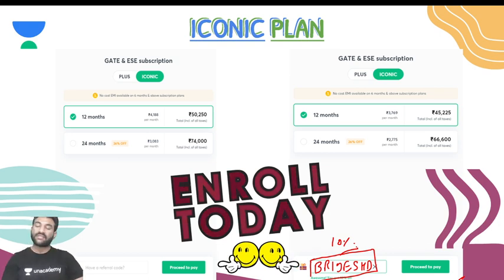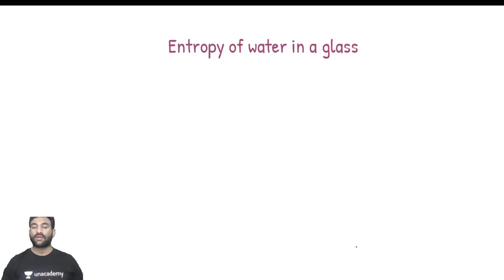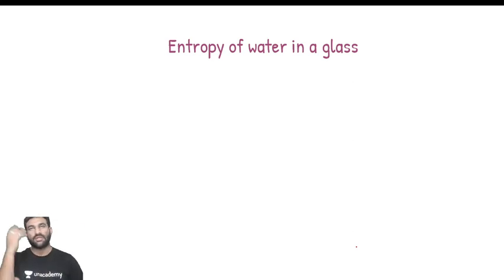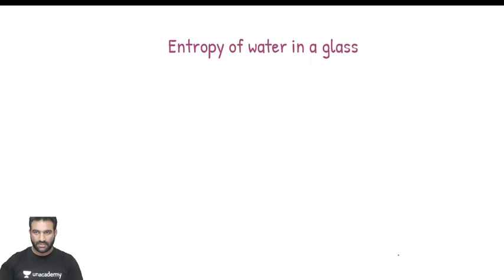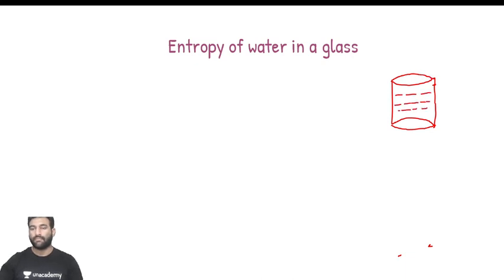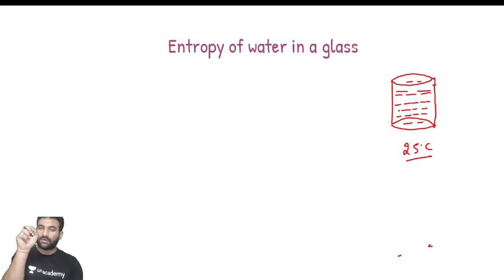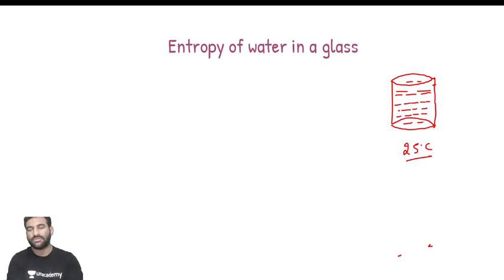Enroll today to get the best of Unacademy. Now, how to find out the entropy of water in a glass. Imagine you are appearing for an interview - there is a glass of water on the table in front of the interviewer, and he suddenly asks you to find out the entropy of the water inside that glass. The room temperature is 25 degree centigrade. Entropy, as you know, is the measure of degree of randomness or disorderness of molecules.